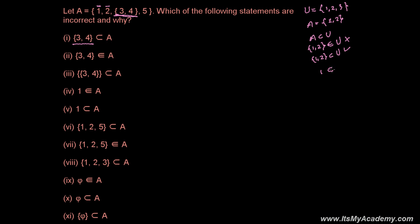Similarly, I can say 1 is a member of set U, and 2 is a member of U. But I cannot write {1, 2} as a member — because once I put elements inside curly brackets, it becomes a set. Since it is a set, it should be treated as a subset, not a member. A set cannot be a member of another set in that way. So {1, 2} is a subset of U — that's correct. I hope you got some good concept from this.